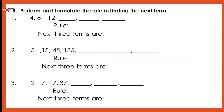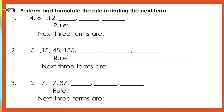Number 3, the rule is multiply by 2 and add 3 or times 2 plus 3. The next three terms are 77, 157, and 317. If you got it right, you did it!